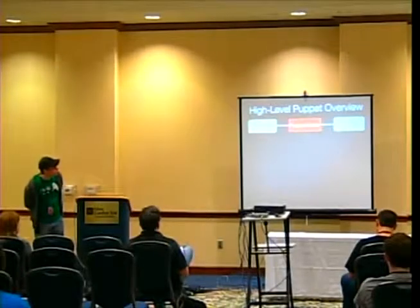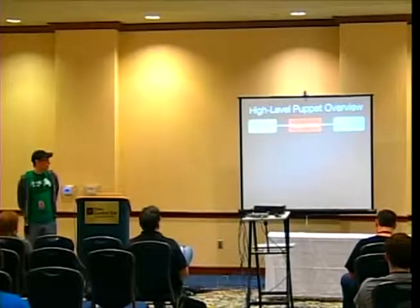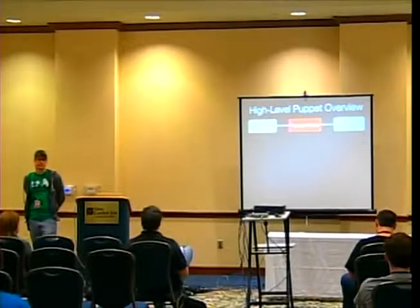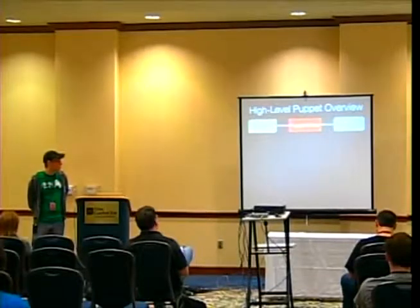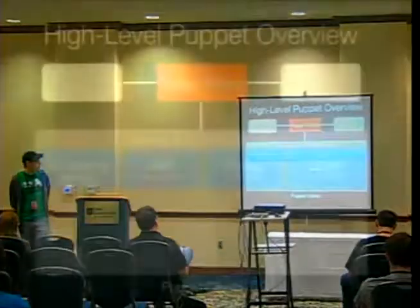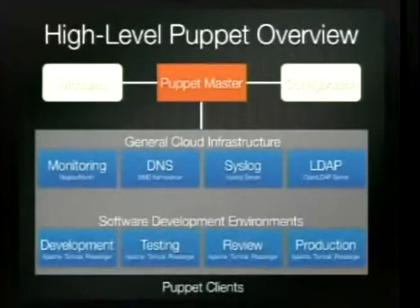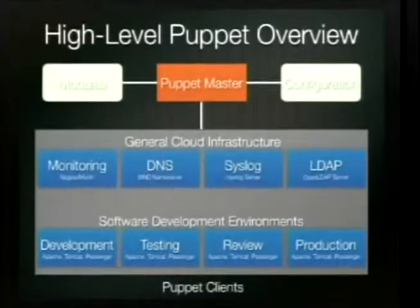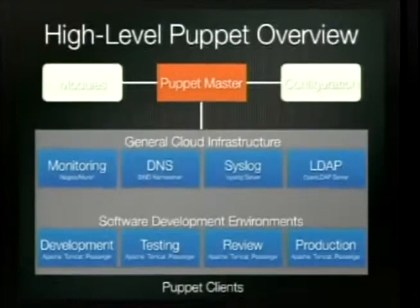Let's get the high-level overview out of the way. The Puppet master doesn't require a client-server model — you can run manifests directly on clients — but the more common model is a client-master relationship. On your Puppet master you'll have modules and configurations. In the cloud or any infrastructure you'll have basic building blocks: monitoring, DNS, log, LDAP. And you might have development, test, review, and production staging environments.